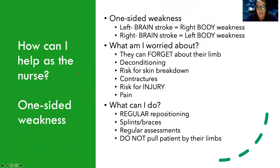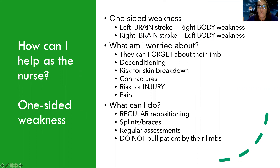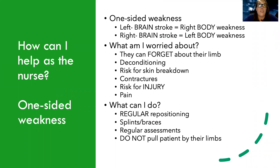Let's break down how to help with each of these. Starting with one-sided weakness: if someone has a left brain stroke — meaning the left side of the brain was affected — then they have right-sided body weakness. If the right side of the brain is where the stroke happened, then the left side of the body is what's affected.